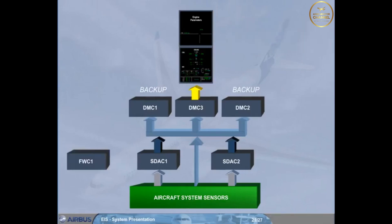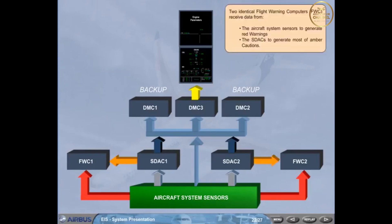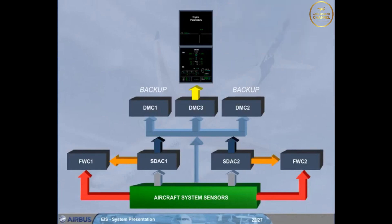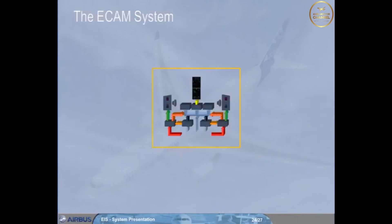Two identical Flight Warning Computers, FWC, receive data from the aircraft system sensors to generate red warnings. The Flight Warning Computers then supply the DMCs for the display of alert messages, the attention getters, the loudspeakers for oral alerts, and synthetic voice messages. All the components shown can be collectively called the ECAM system. We will study the use of the ECAM system in a separate module.